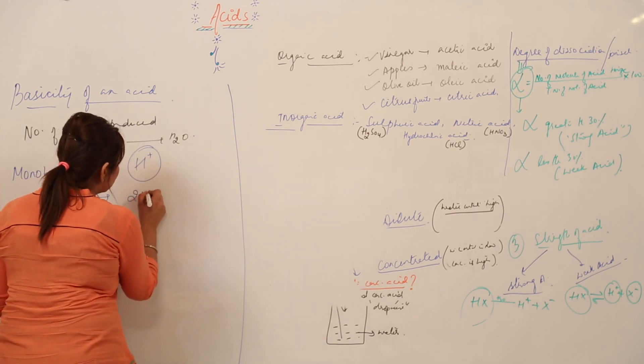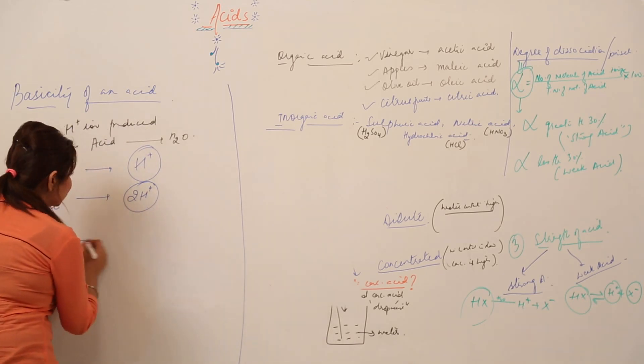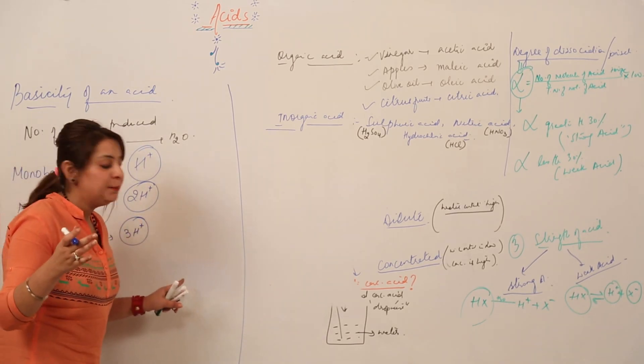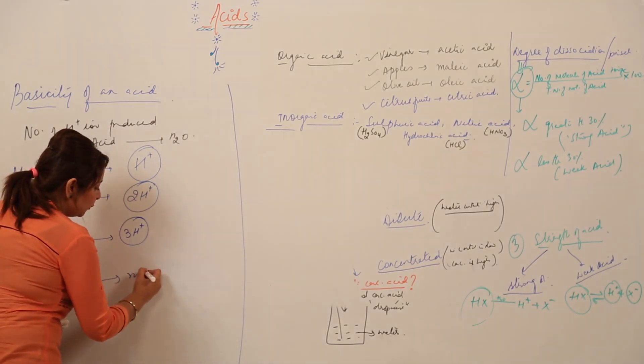Likewise, if it produces three hydrogen ions, it is said to be tri basic. And more than three, we call them poly basic acid.